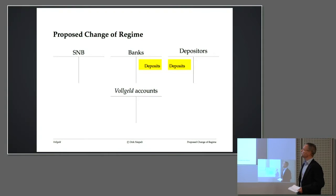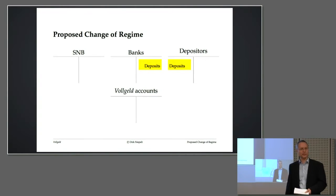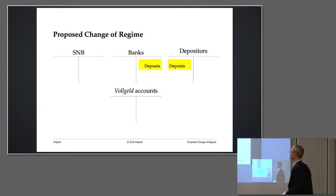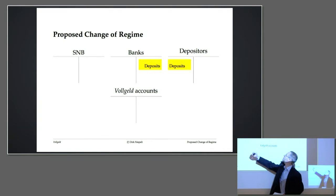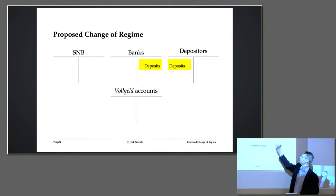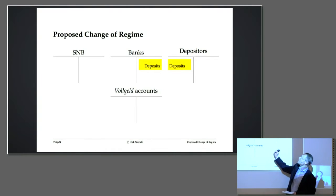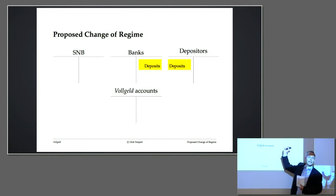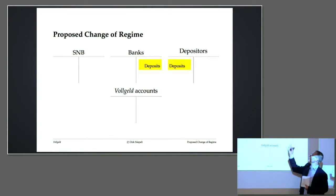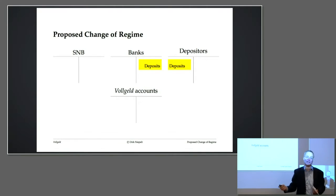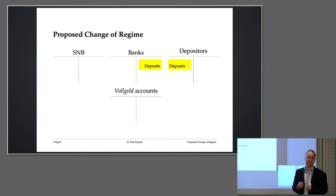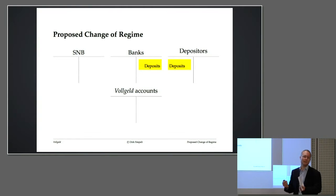Here in a nutshell is the proposed chain of regime change. This is the balance sheet of the central bank, the commercial bank sector, and the general public. These days, I have a deposit account at UBS — it's a liability for UBS, an asset for me. I feel this is sort of money, but it's not really money, because it's not a liability of the Swiss National Bank. It's just a promise by UBS that if I want, they will give me some Swiss francs. Whether they will actually be in a position to provide it when I need it is a different question.